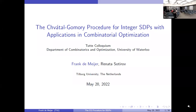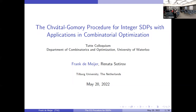Today we're lucky to have Frank de Minor giving us a talk. Frank is a PhD student at Tilburg where he's been since 2019. He works in polyhedral and semi-definite programming methods for combinatorial optimization. He's already received several awards including the Brauer Award for best master's thesis in the Netherlands in 2019 and the INFORMS Meritorious Paper Award in 2021. He also plays drums in a band and is active in the theater, so please go ahead, Frank.